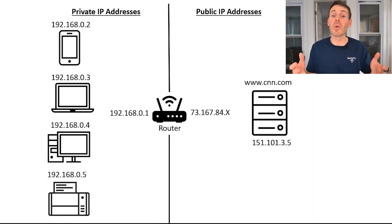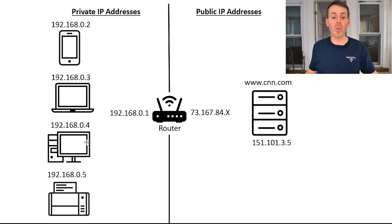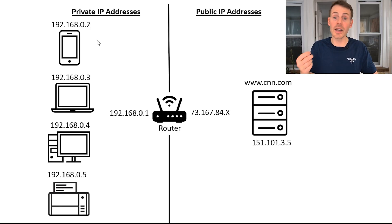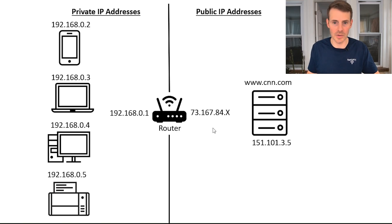So how are private and public IP addresses used together? Let's take a look at an example. Here is a home network. On the left-hand side are your private IP addresses. Any devices in your home Wi-Fi network will automatically be assigned these IP addresses from your router. Your router will have the standard 192.168.0.1 IP address for most people. The entire left side of the diagram represents private IP addresses. Conversely, when you sign up for an internet plan with your internet service provider, your home will receive one public IP address. This means all the devices in your home share that one public IP address. We're using the example of CNN.com here, which also has a public IP address.